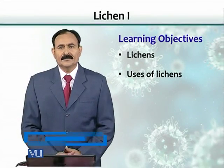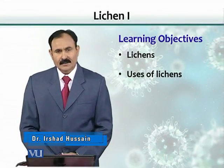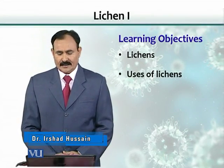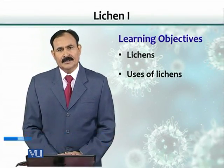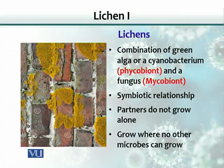Learning objectives include lichens and their uses. Lichens are combinations of green alga or cyanobacterium, which is also called phycobiont, and a fungus, which is known as mycobiont in this relationship.